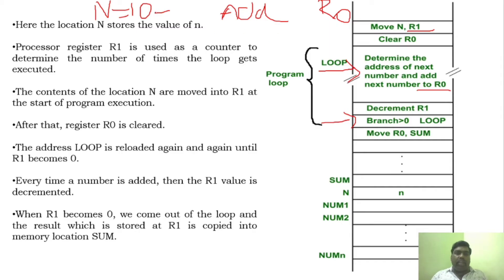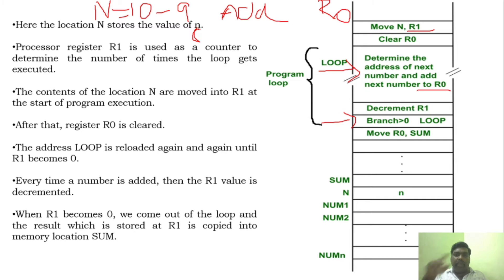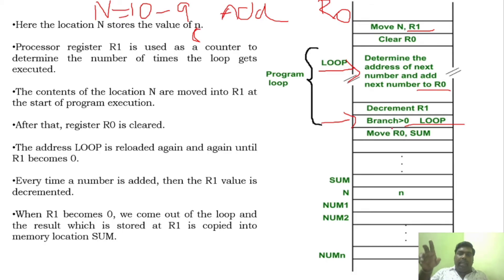What I am going to do is decrement R1. For example, if R1 value is 10, it will be decremented to 9. And again, R1 value 9 will become 8, then 7 — like that, it will be decremented. And in every counting, you have a branch instruction here.